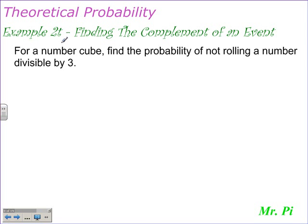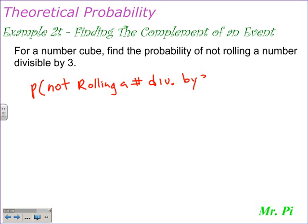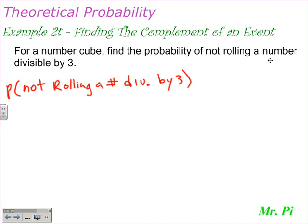Example 2T: finding the complement of an event for a number cube. Find the probability of not rolling a number divisible by 3. So we write this out: the probability of not rolling a number divisible by 3. This is not necessarily the best example to illustrate the complement of an event, but it will work. The probability of not rolling a number divisible by 3 is going to be equal to 1 minus the probability of rolling a number divisible by 3.